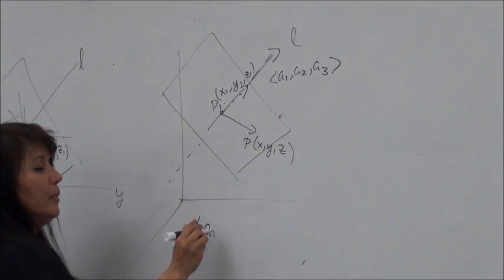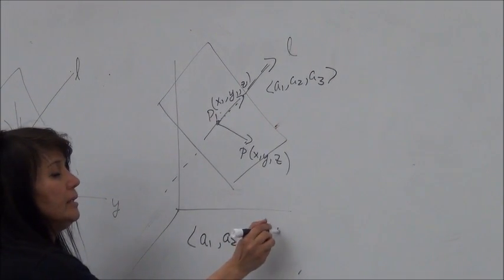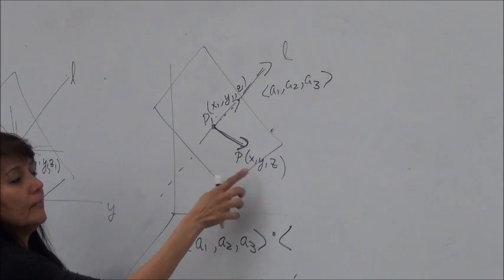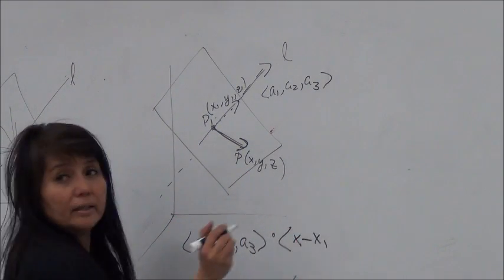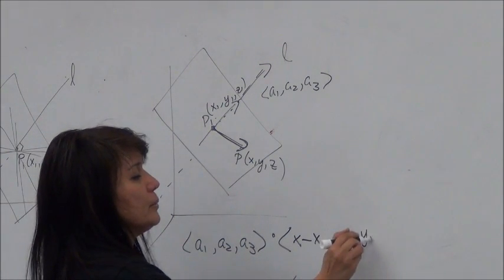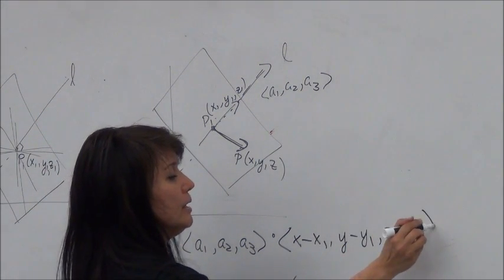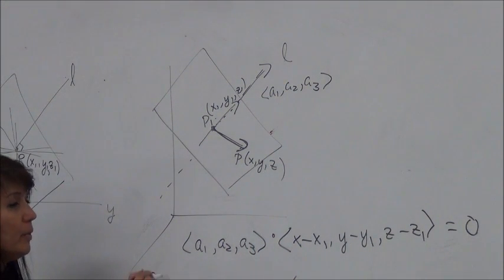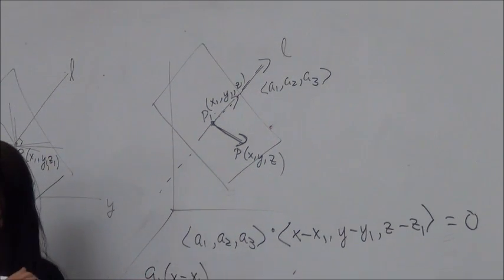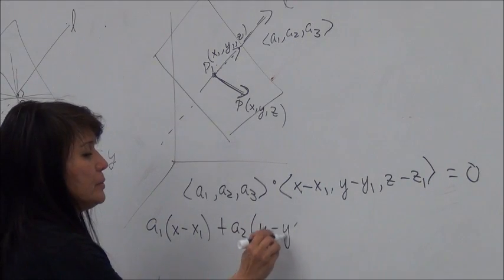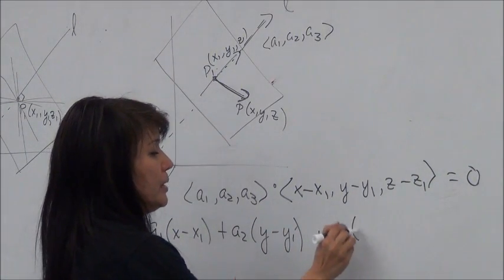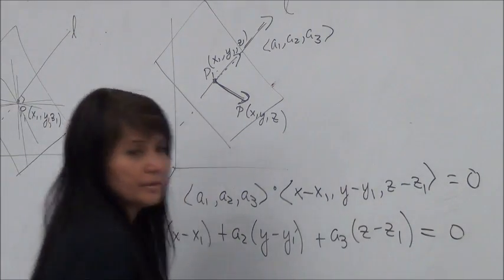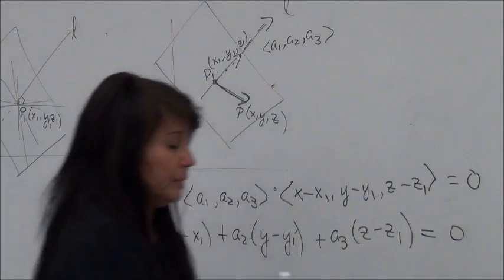So for this, the dot product that I'm talking about is A1, A2, A3 dotted with this vector. How do I form this vector? It's X minus X1, right? Y minus Y1, Z minus Z1 has to be zero. That's how you do it, not cross. That's another problem I was thinking of. And then, so what we get is A1 times the quantity X minus X1 plus A2 quantity Y minus Y1 plus A3 quantity Z minus Z1. That has to be zero. So let's look at an example of how we do this.